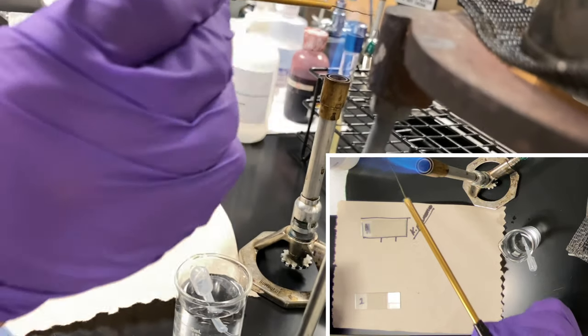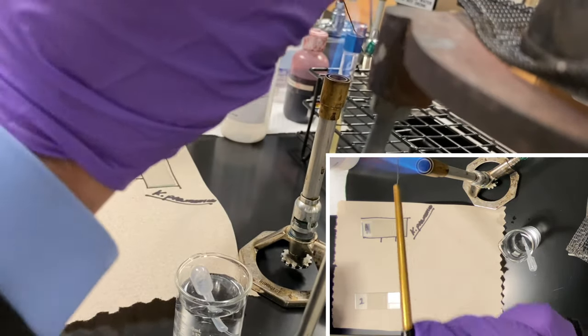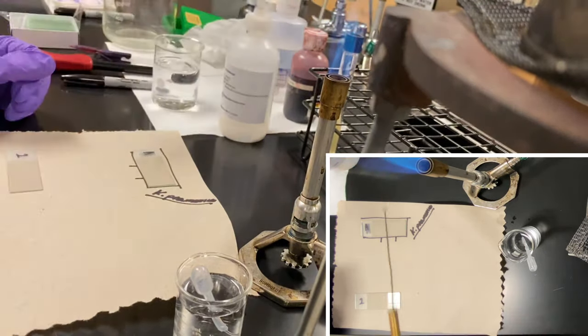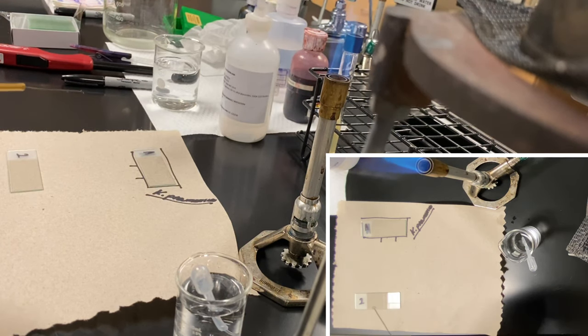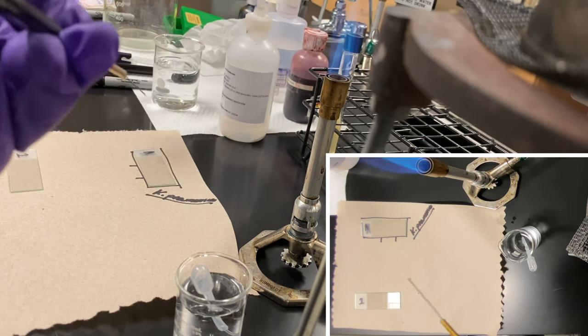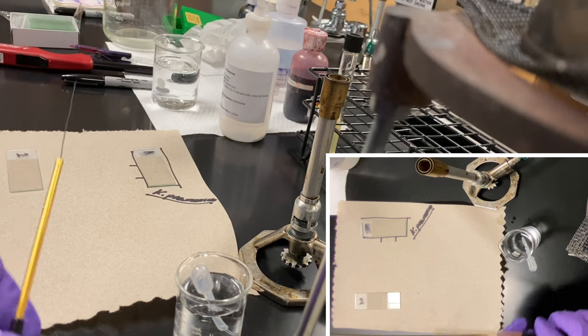Now I'm going to sterilize my loop again. 45 degree angle. One, two. Let this sit. Now I'll close this off. This is sterile.